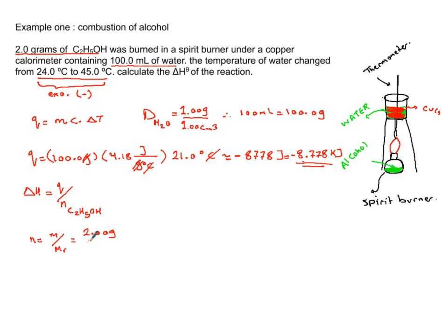I have 2 grams divided by molar mass of ethanol, which is 46.08 grams per mole. When you do this division, you get 0.0434 moles.